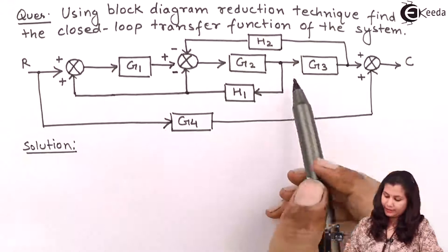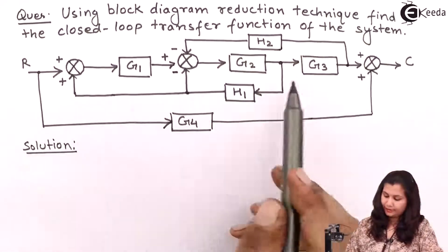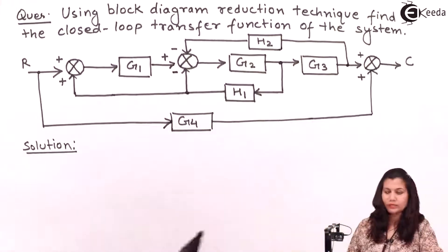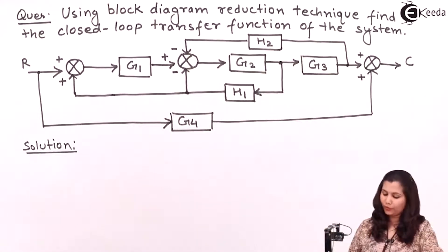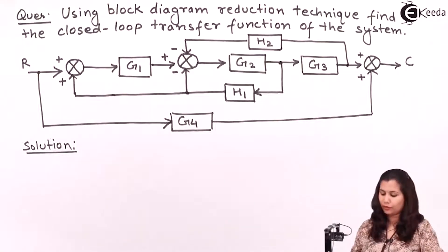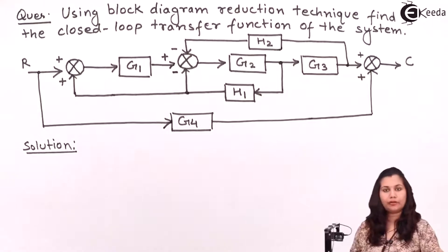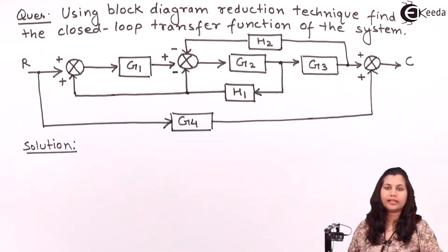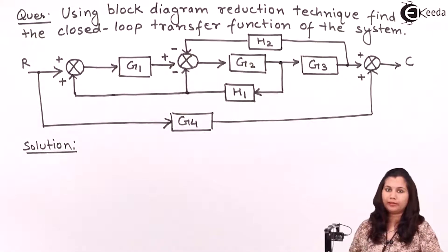We can see that there are no blocks which are connected in series or in parallel in this block diagram. So we have to move any of the summing point or takeoff point so that the blocks come in series or parallel combination.